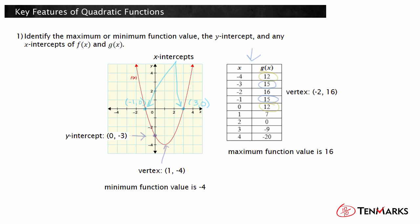The y-intercept occurs when x equals zero, so the point zero, 12 is the y-intercept. The x-intercepts occur when g of x equals zero. You can see that two, zero is one of the x-intercepts. Because this x-intercept does not occur at the vertex, there must be another x-intercept. Use the symmetry of this table to determine its location. The x-value 2 is 4 units to the right of the x-value of the vertex, negative 2. The other x-intercept must be located 4 units to the left of the vertex. 4 units to the left of negative 2 is negative 6, so the other x-intercept is negative 6, 0. So the x-intercepts of g of x are 2, 0 and negative 6, 0.